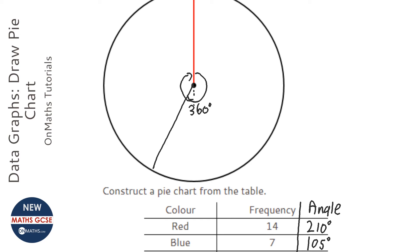And don't forget to label them, so that would be red. 105 is just over 90. And I'm just doing this roughly. I'm not even going to use a straight line to show that it's not accurate. And then label that blue.